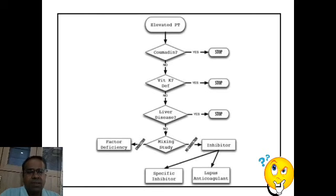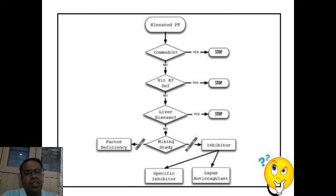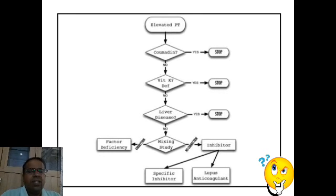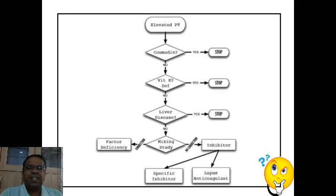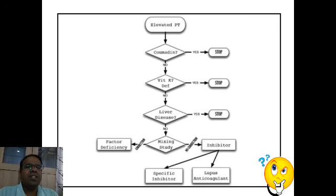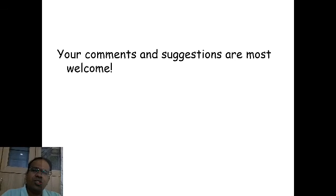In this podcast we saw what INR (international normalized ratio) is, how the ISI (international sensitivity index) of the prothrombin reagent affects the INR, and how INR should be used only in the case of oral anticoagulants. Hope this podcast was useful. This is Sachin Kale signing off. Your comments and suggestions are most welcome — thank you so much and see you again.